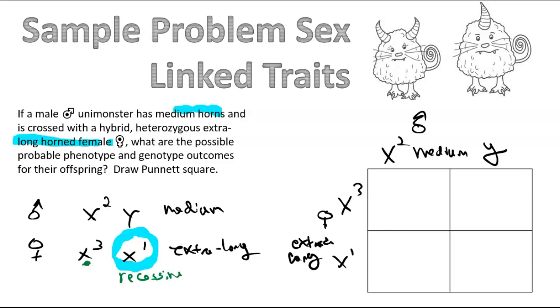Now, in our outcome here, we're going to see that the first columns would be all girls. Because the Y makes the guy. They only can get it from their father. So it's always a 50-50 chance, boy and girl. Now, let's look at what those boys and girls will look like.